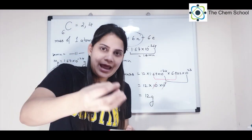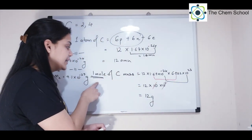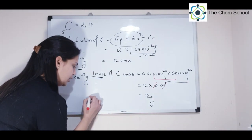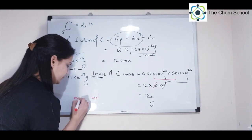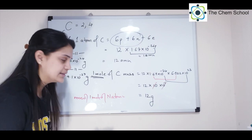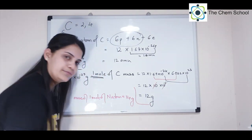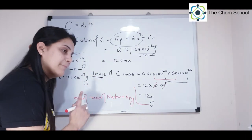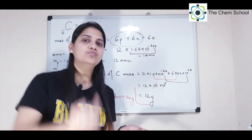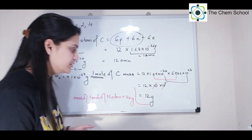For another example: one mole of nitrogen atoms. Nitrogen has mass number 14, so mass of 1 atom of nitrogen = 14 amu, and mass of 1 mole of nitrogen atoms = 14 grams. The key difference is the unit: one atom uses amu, one mole uses grams. I hope this is very clear to all of you.